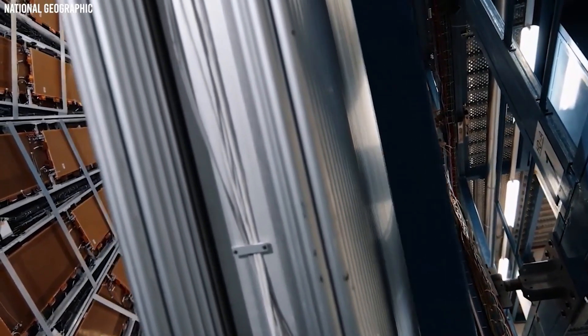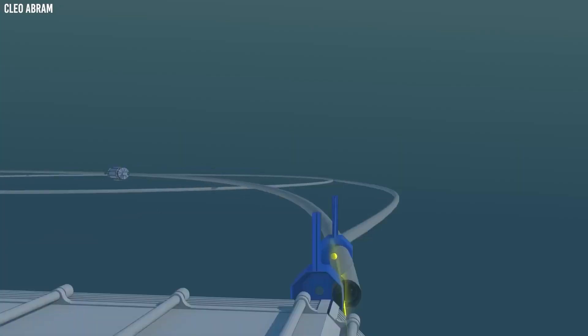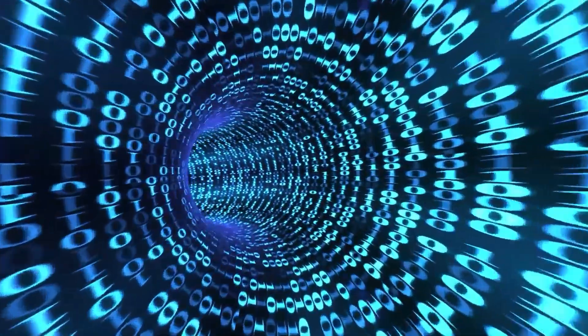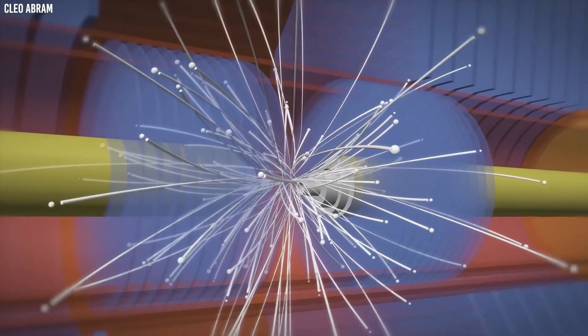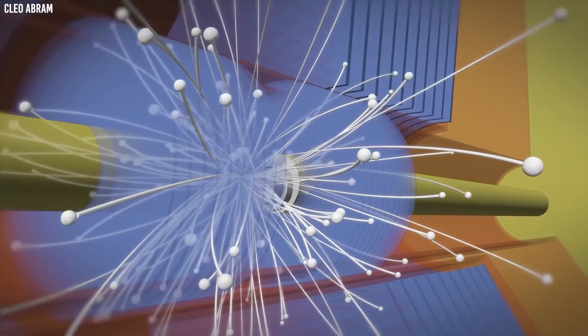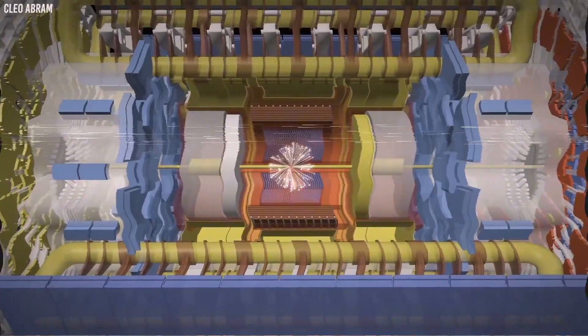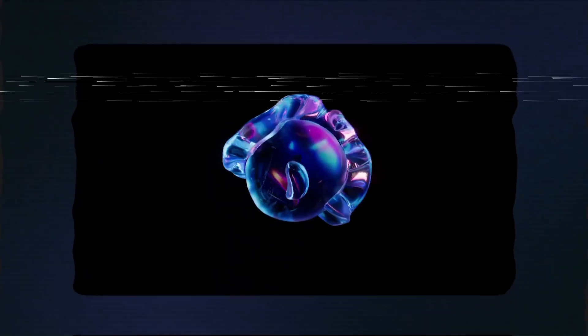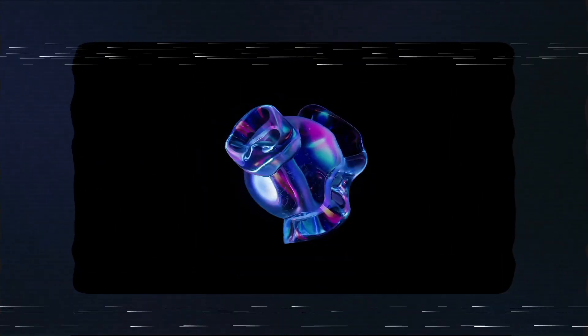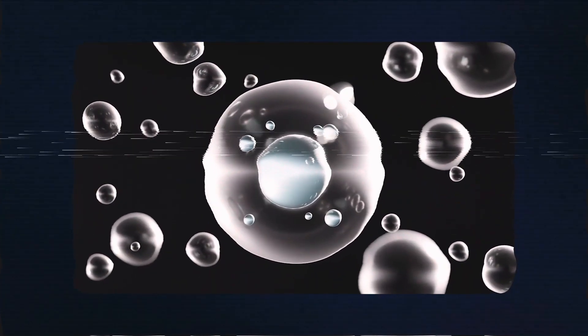Protons travel through this ring at nearly the speed of light in opposite directions, before colliding inside massive detectors. When these collisions occur, energy is converted into showers of subatomic particles, some of which have not been observed since the very early moments after the Big Bang. By analyzing how these particles form and decay, scientists can either validate current theories or discover entirely new physics.